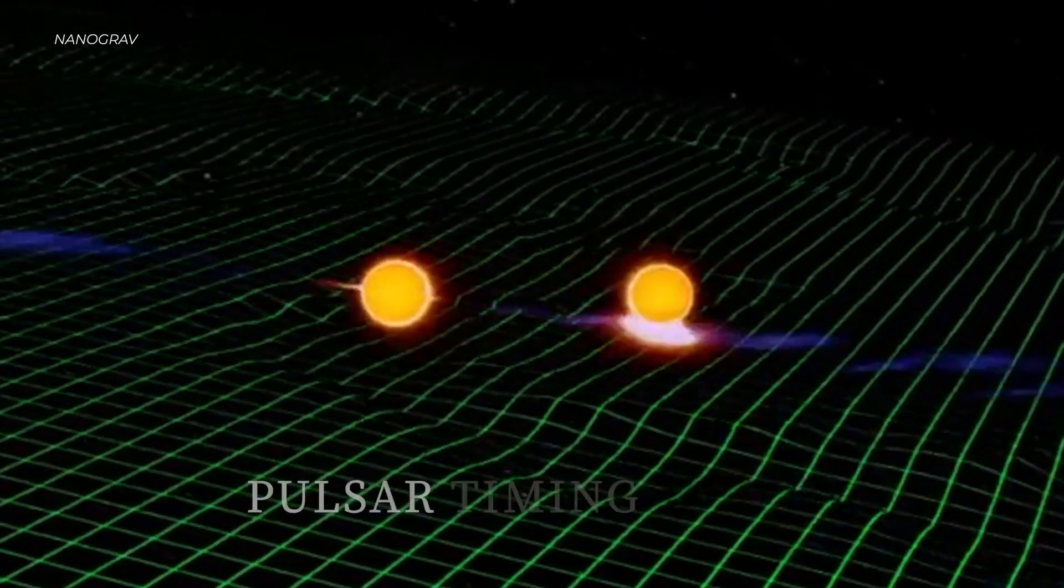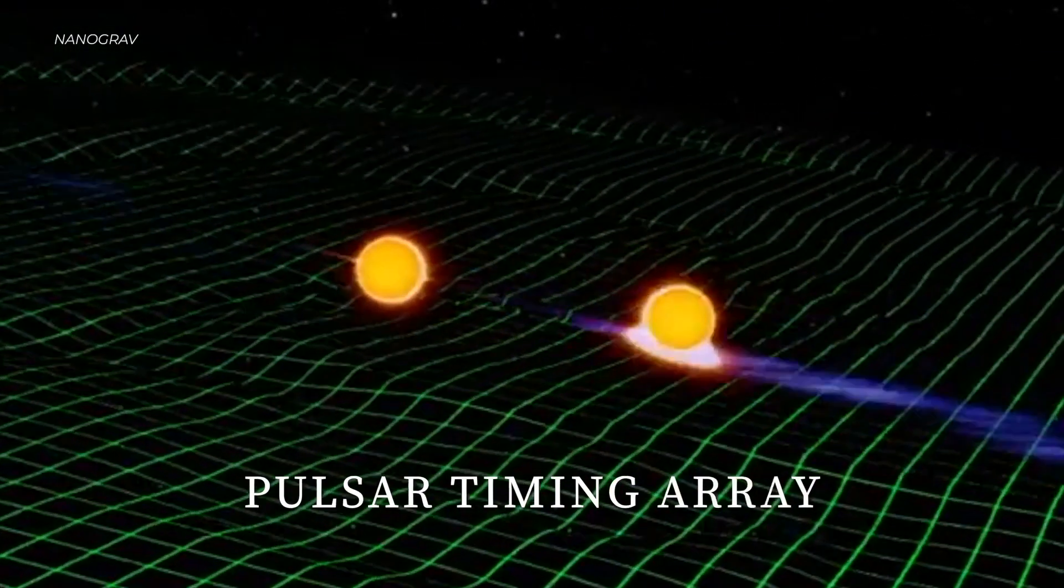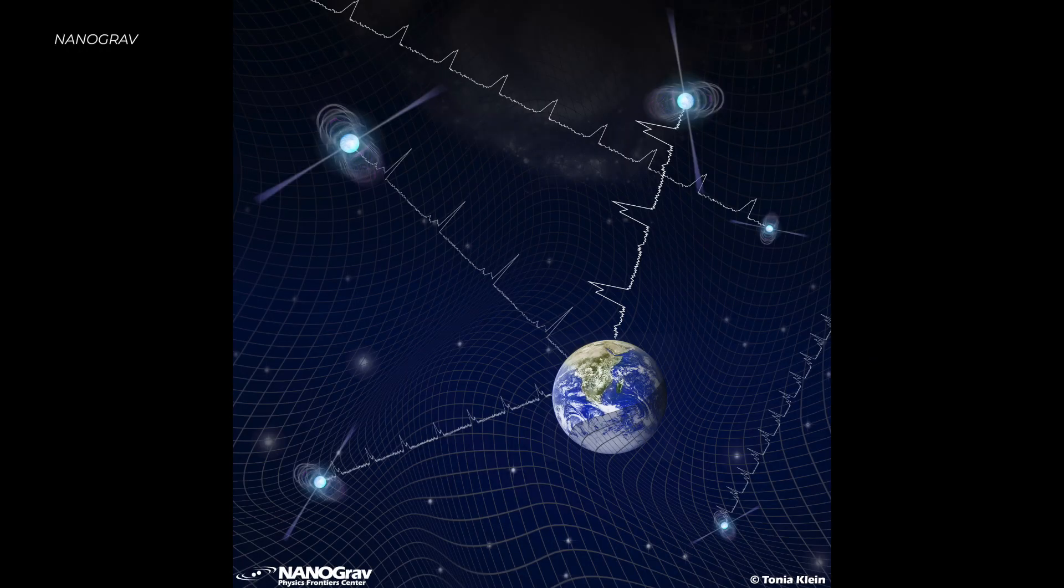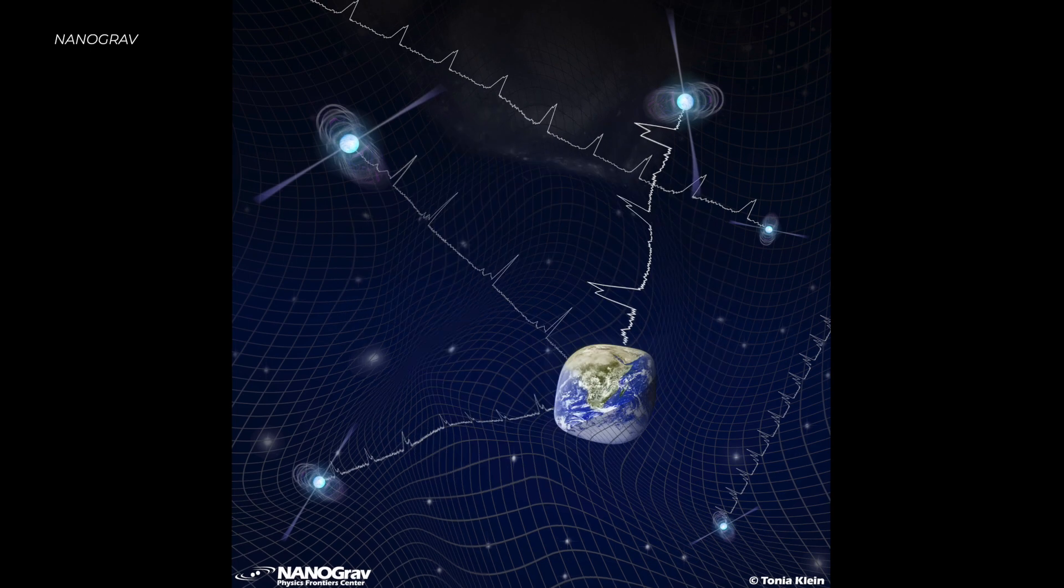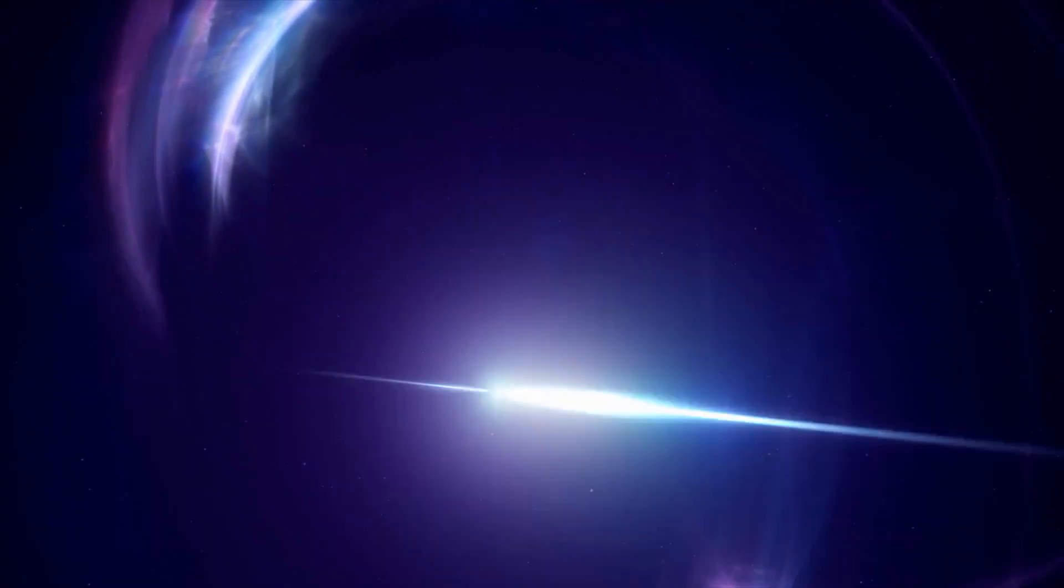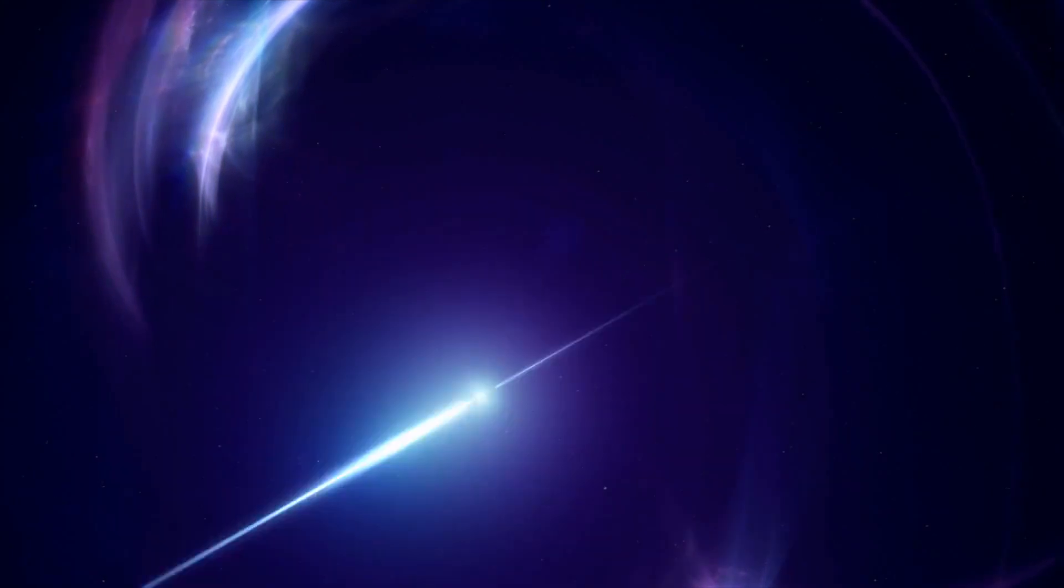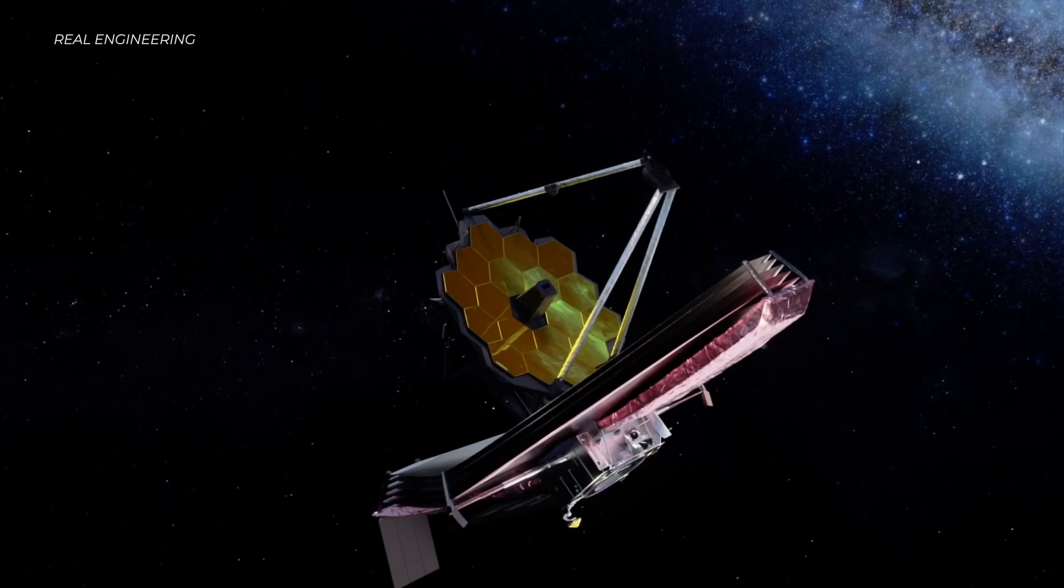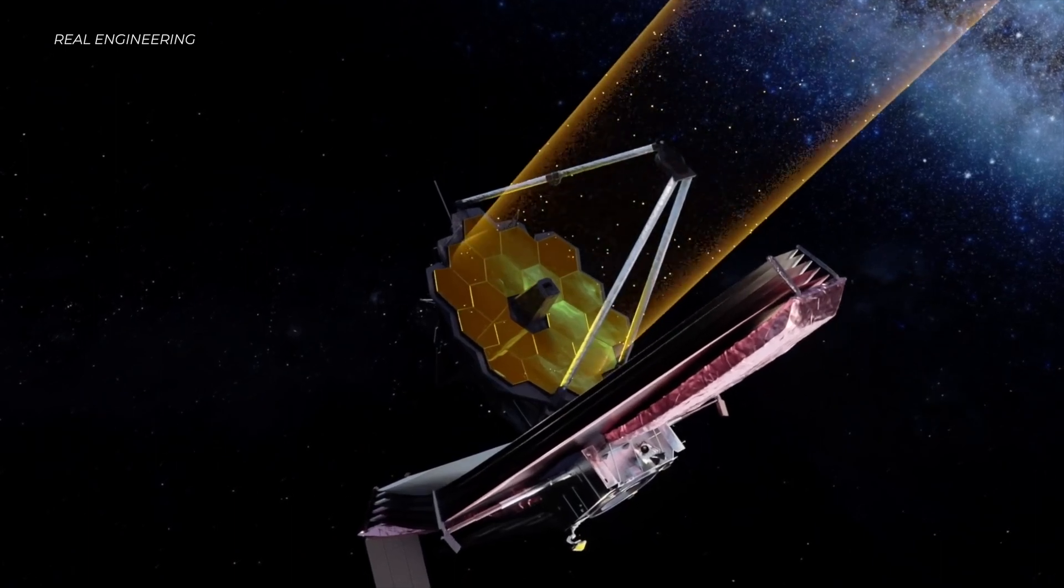They made what is called a pulsar timing array, and the idea behind it is that they could study the relative positions of each pulsar in the array to determine if a large gravitational wave has passed by, thus altering its position. And keep in mind, these pulsars are light years away from Earth. So in other words, they used an array of 68 pulsars to effectively turn our entire galaxy into a telescope.